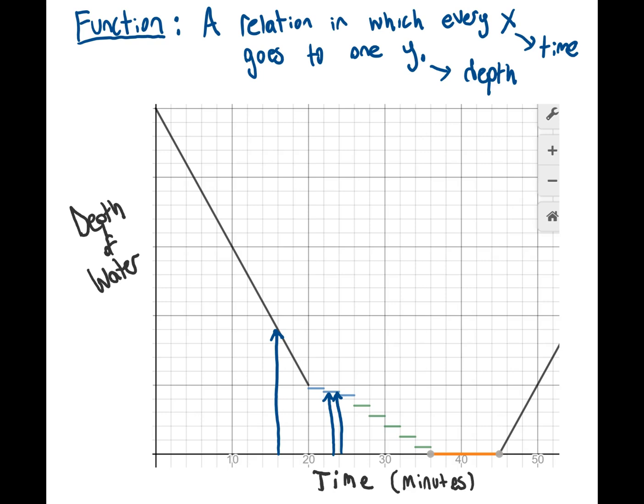Now, if I had this random extra line in here, that would be a problem. It would make this not a function, because this time would be going to two different depths. And that can't happen with a function. But as it's drawn, as long as there's no places where the time goes to multiple depths, that makes it a function.